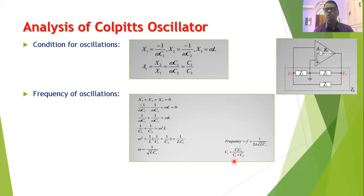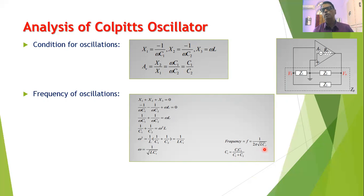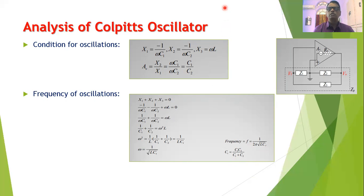From the frequency expression, the inductor and capacitors appear in the denominator, and the frequency of oscillation depends only on L, C1, and C2. Thank you friends for viewing the session. Hopefully you have understood the working and analysis of the Colpitts oscillator.